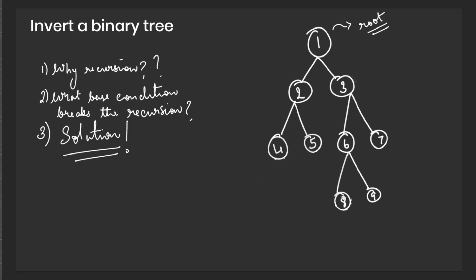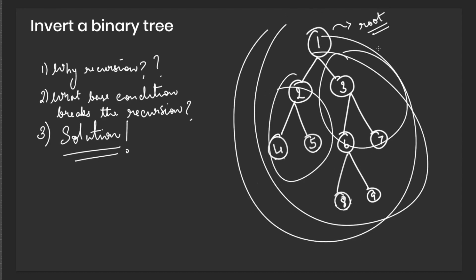we are going to use recursion for this problem because each part of this tree looks like its root tree. This part looks like the entire tree. This part looks like the entire tree.